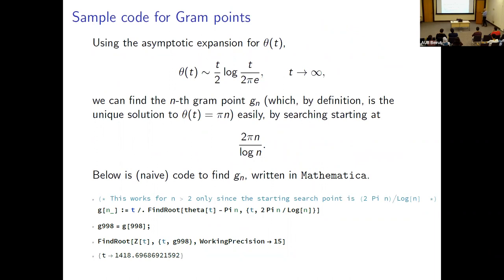To compute gram points, you find a value of t giving θ(t) = πn. A good initial guess for the nth gram point is 2πn / log n; you then plug this into a root-finding program to get the precise value. Here is a simple Mathematica implementation using FindRoot, finding the 998th gram point and then searching for a root of Z(t) near that point — locating the 999th zeta zero found before.